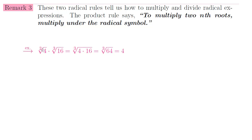In the first example we have the cube root of 4 times the cube root of 16. To multiply two cube roots we transfer the multiplication underneath the cube root symbol. So the cube root of 4 times the cube root of 16 becomes the cube root of 4 times 16, which is the cube root of 64. We know that is 4, because 4 times 4 times 4 equals 64.